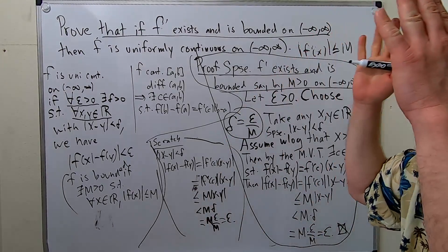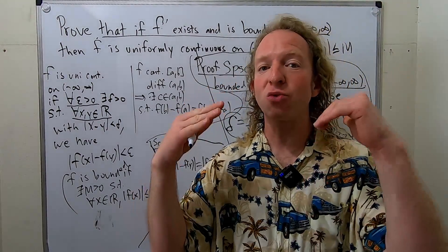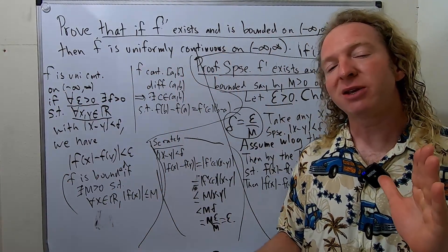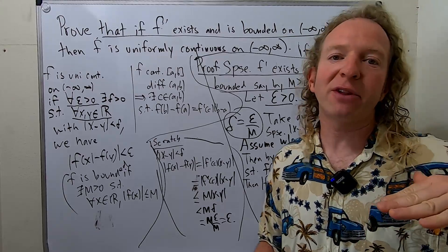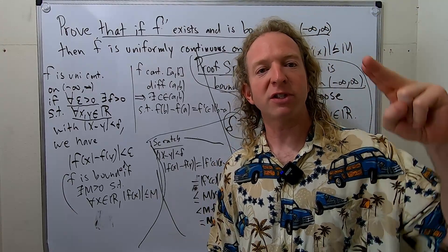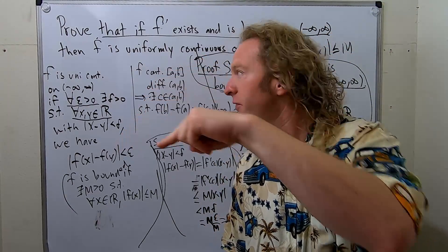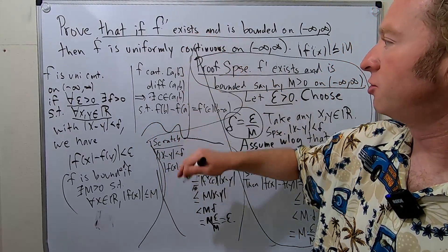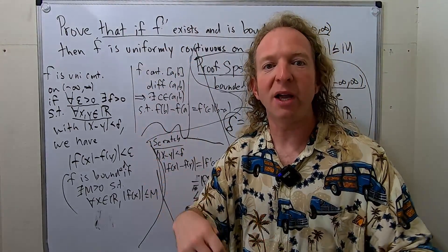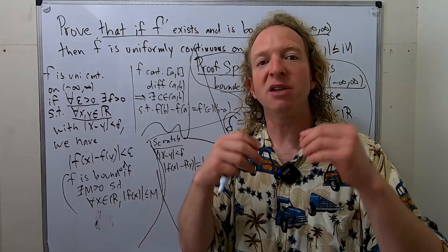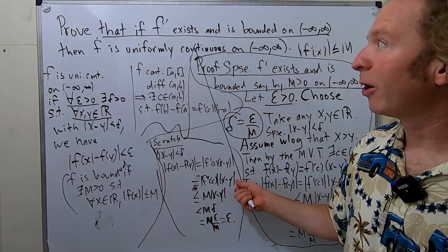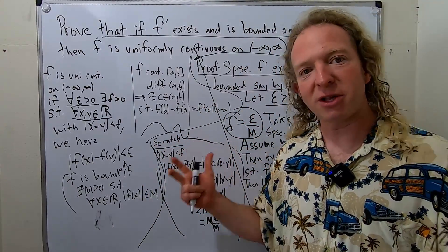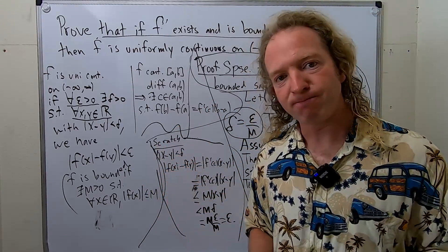Really nice problem. So if you have a function that has a bounded derivative on the real line, it is uniformly continuous — and that should make sense. Uniformly continuous functions don't have abrupt changes; the continuity is uniform. I hope this video has been helpful to someone working on something like this. Good luck and take care.